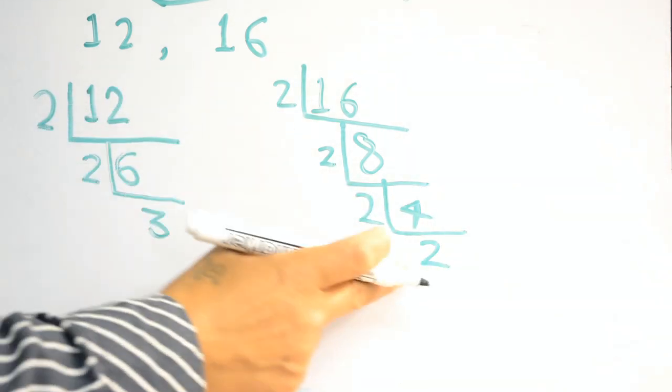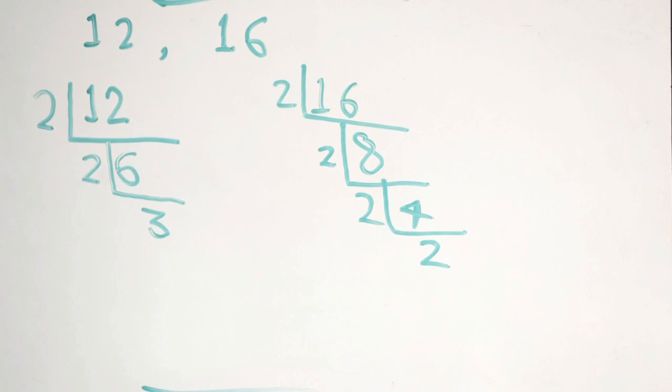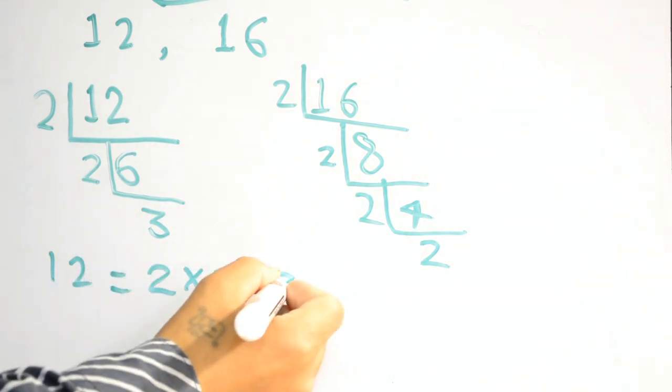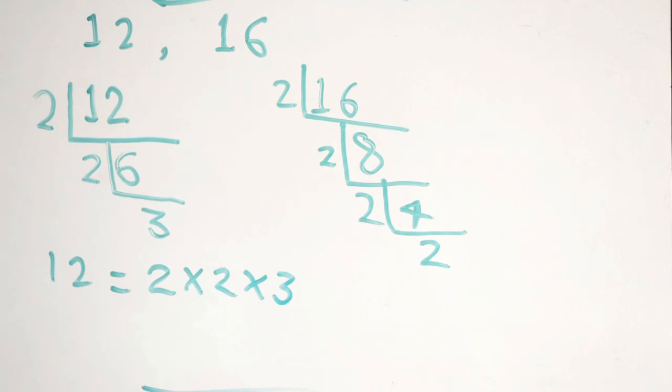So these all four twos are prime numbers. We have the number 12, which is 2 times 2 times 3. The prime factors of 12 are 2 times 2 times 3. Prime factors of 16 are 2 times 2 times 2 times 2. Now we have to select the common numbers.